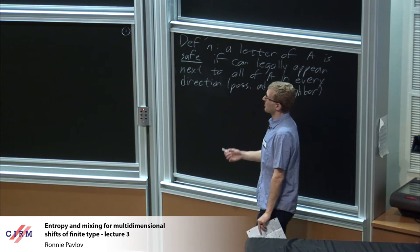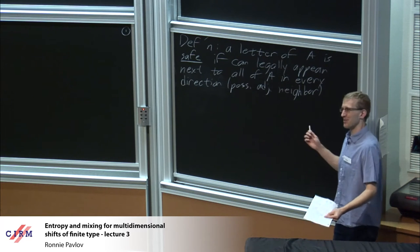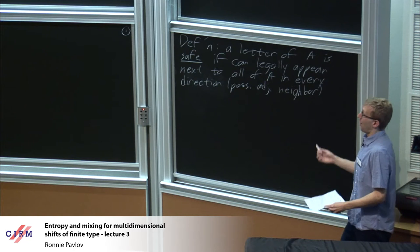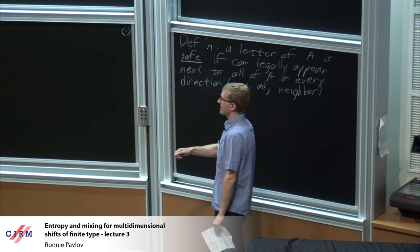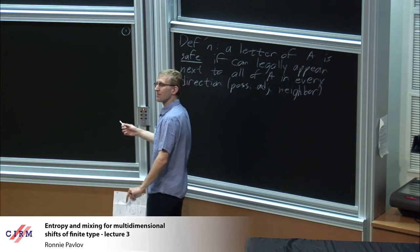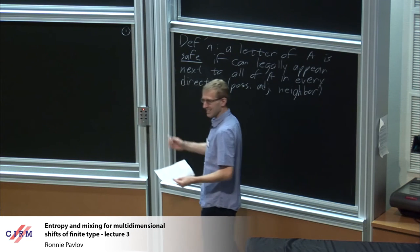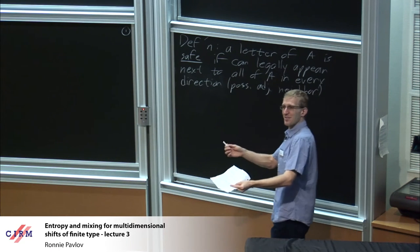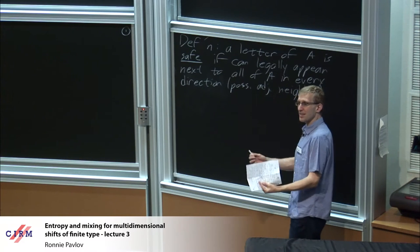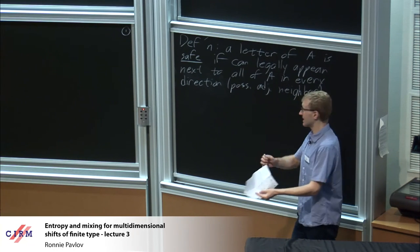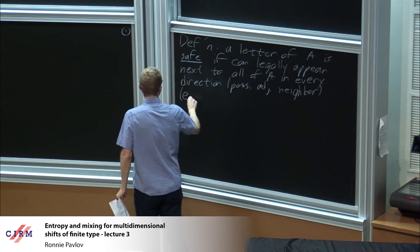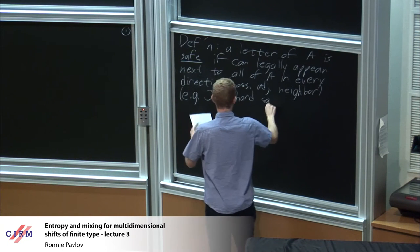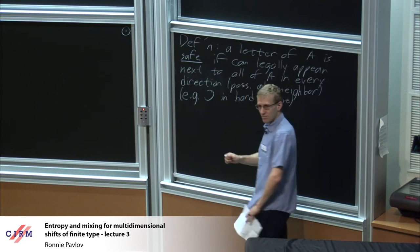Can anybody tell me an example of a safe symbol? Zero in the hard square model — in the hard square model the only bad things were one-one, and zero was legal next to everything. So when I say safe symbol, just think of zero in the hard square.